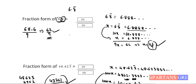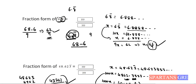To repeat the rule: for 6.8̄, take the number without the decimal — 68 — and subtract all non-recurring digits. The non-recurring digit is 6, so numerator = 68 − 6 = 62. For the denominator, consider only digits after the decimal: one digit, and it is recurring, so put one 9; there are no non-recurring digits after the decimal, so no zeros. Final answer: 62/9.